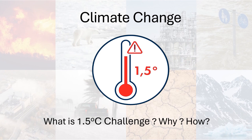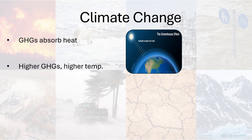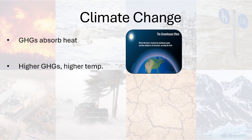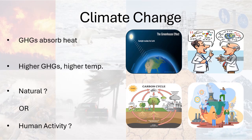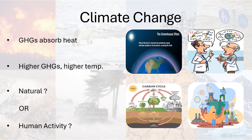We know from the Greenhouse Gas video that GHGs trap heat and raise the Earth's temperature to make it habitable. As the concentration of GHGs rises in the atmosphere, the Earth's average temperature increases due to the extra heat trapped by these gases. Some scientists have argued that the increase in concentration of CO2 and other GHGs is completely natural, whereas other climate scientists hold the popular opinion that the higher concentration of GHGs is purely due to human activity.